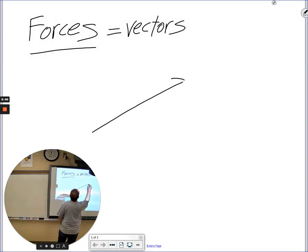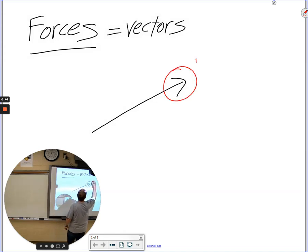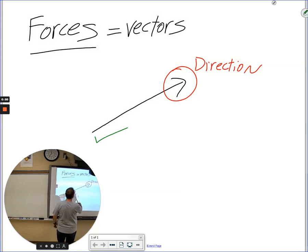Are forces scalar quantities or vector quantities? They are vector quantities because they have both what and what? Movement or direction and magnitude. Direction and magnitude, that's exactly right.